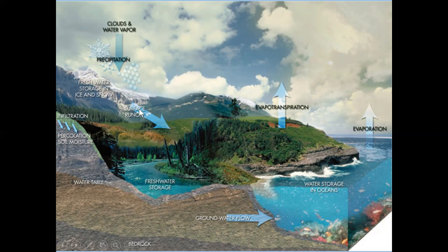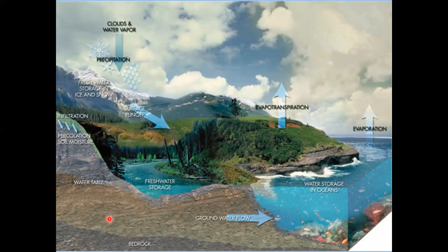Some of that water runs off as channelized flow into rivers and streams and flows back to the ocean. Infiltration — sometimes called percolation — is where water moves through rocks until it reaches a zone where all pore spaces are saturated. The top of that saturated zone is called the water table, and the water-bearing layer of rock is called an aquifer. Where the water table intersects the surface, it can give us lakes or rivers.